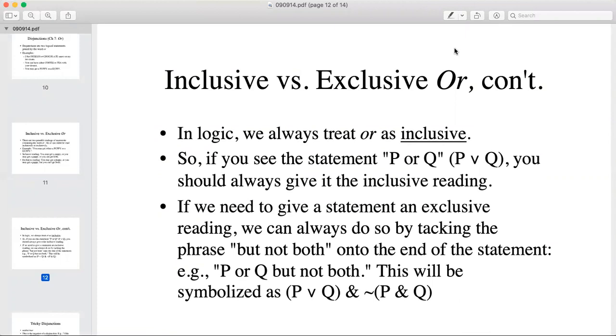If we need to give a statement an exclusive reading, we can always do so by tacking the phrase but not both onto the end of the statement. For example, P or Q but not both. You may get a puppy or a guppy but not both.